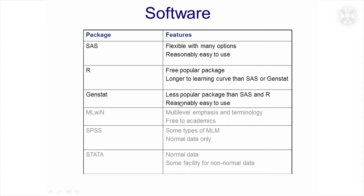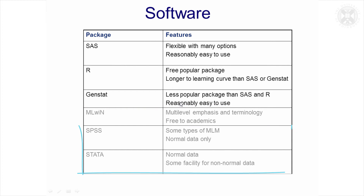You probably wouldn't use MLWIN unless you're interested in social science aspects, because the terminology is so different. Nevertheless, it's free to academics and it's got all types of models available within it. SPSS and Stata do have mixed models, but they're a bit more limited. SPSS is freely available at Roslin as well, but it is quite limited — I think it's mainly just for normally distributed data.